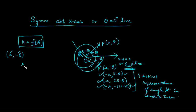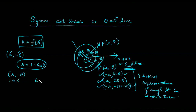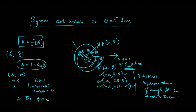Let's see with the help of an example. Let's suppose the function is r = 1 − cos θ. If you want to check whether it is symmetrical about the x-axis, we put the first point (r, −θ). We replace r with r and theta with minus theta. This gives 1 minus cos(−θ), which is again 1 minus cos θ, which equals r. So the left-hand side equals the right-hand side. This point satisfies the graph, which means the graph is symmetrical about the x-axis.